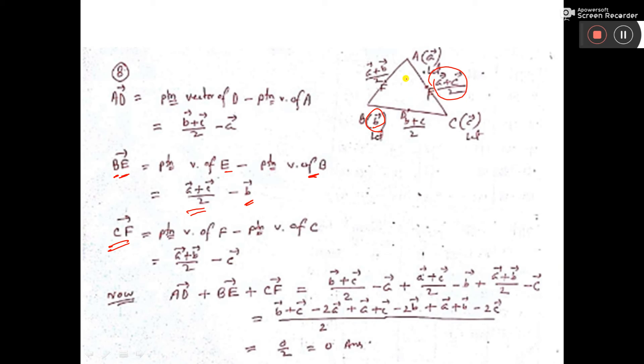Then CF, the median from C to F. The position vector of F is (a + b)/2, so CF = (a + b)/2 - c.